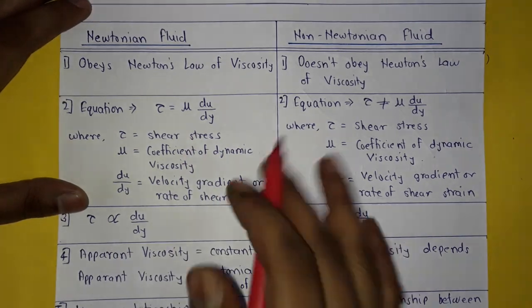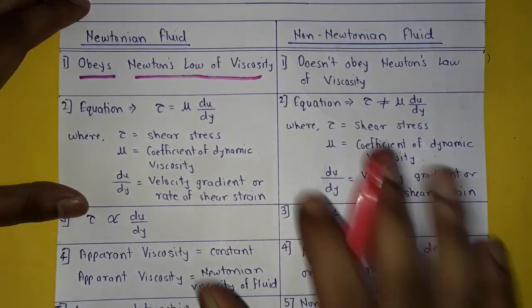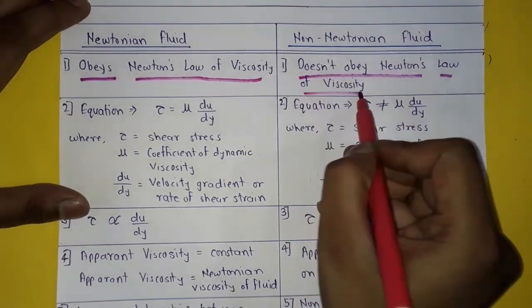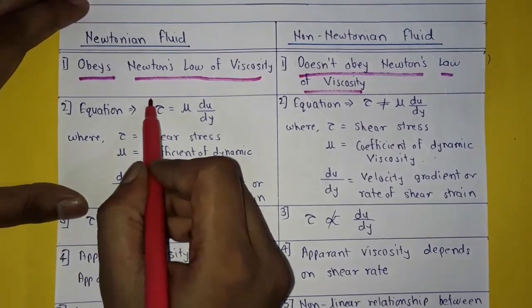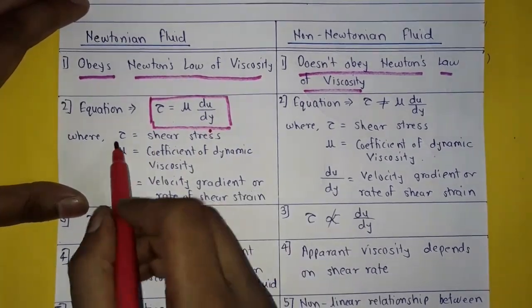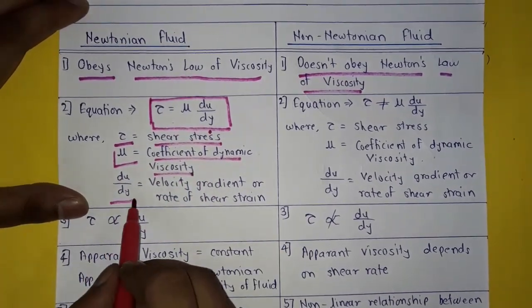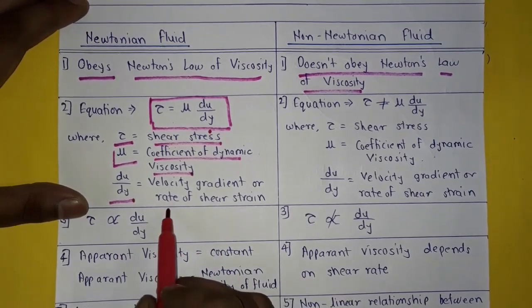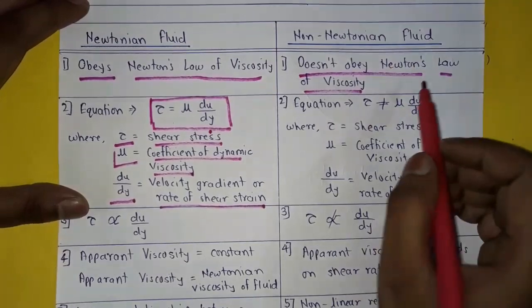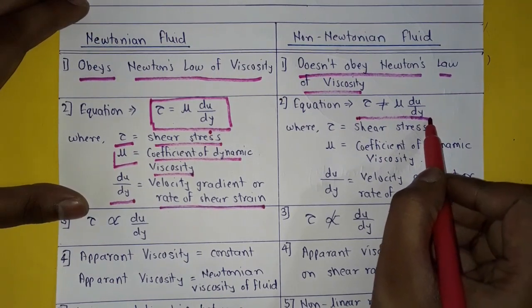Friends, a Newtonian fluid is a fluid which obeys Newton's law of viscosity, and a non-Newtonian fluid is a fluid which does not obey Newton's law of viscosity. Newton's law of viscosity is represented by the equation: tau is equal to mu times du upon dy. Here, tau is the shear stress, mu is the coefficient of dynamic viscosity, and du upon dy is the velocity gradient or rate of shear strain. In non-Newtonian fluid, tau is not equal to mu times du upon dy.